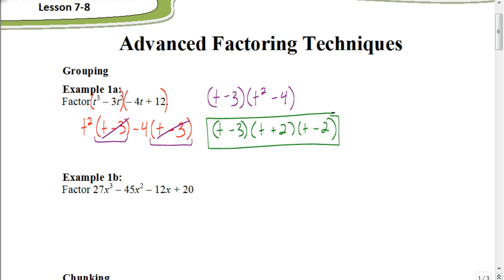That is your final answer. Why don't you take a minute and try the next one on your own. Start by grouping the first two terms and the last two terms, find the greatest common factor from each group, and factor out the common binomial. Whatever remains — like the t squared minus 4 in our example — goes in parentheses, and always check to see if it can be factored down further, as that factored to t plus 2 times t minus 2, keeping the t minus 3.